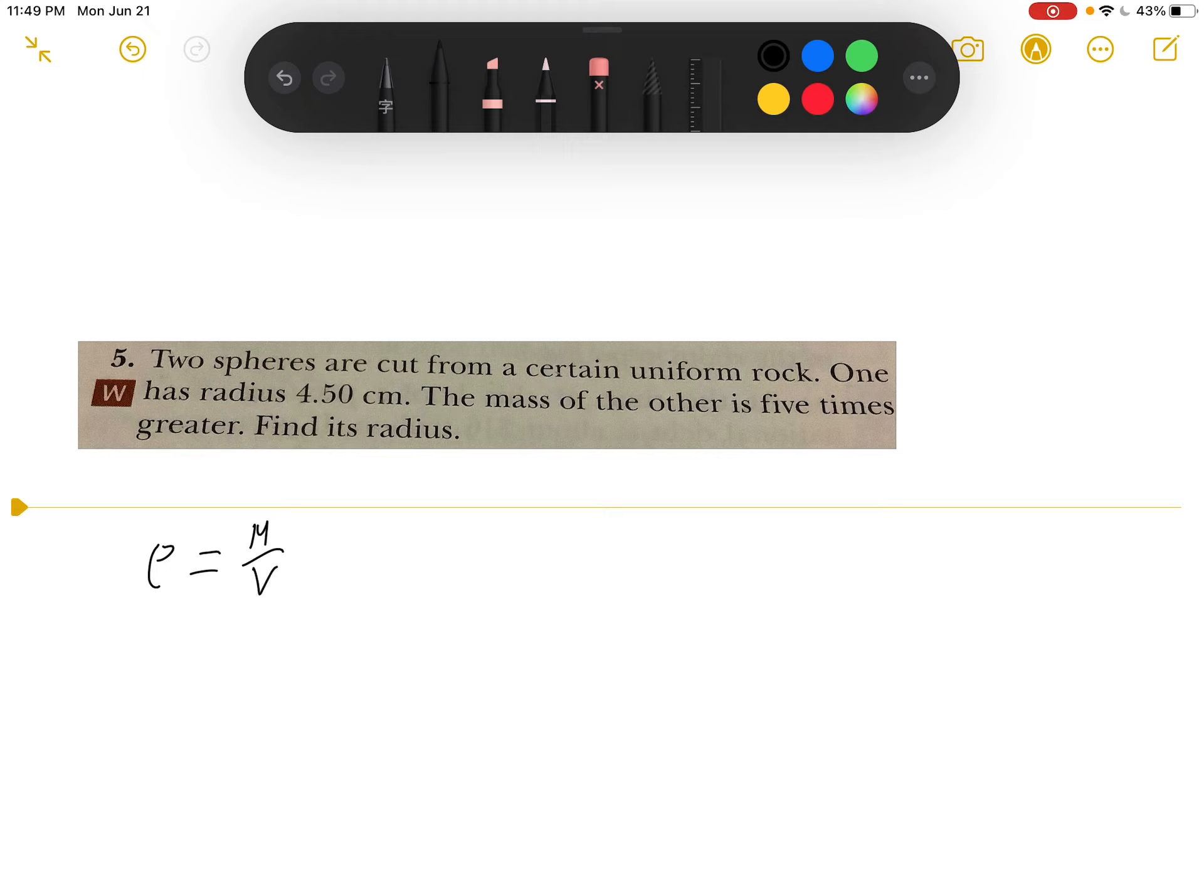So we have two spheres that are cut from a certain rock. That means their density will be the same. So let's call rock 1.